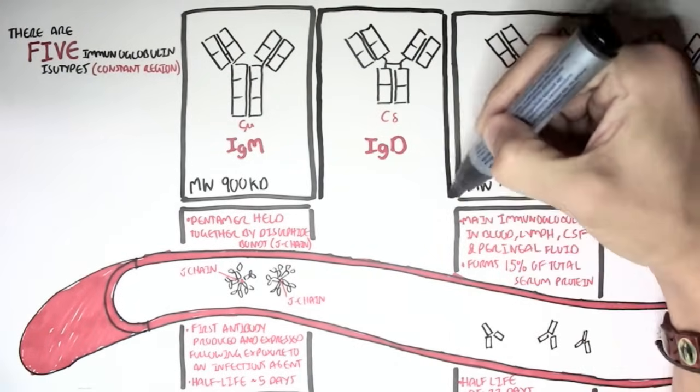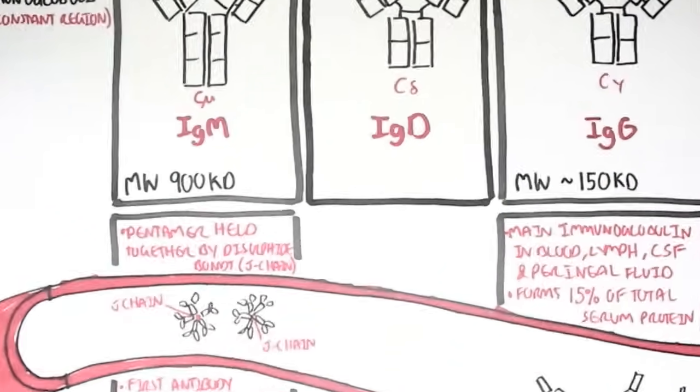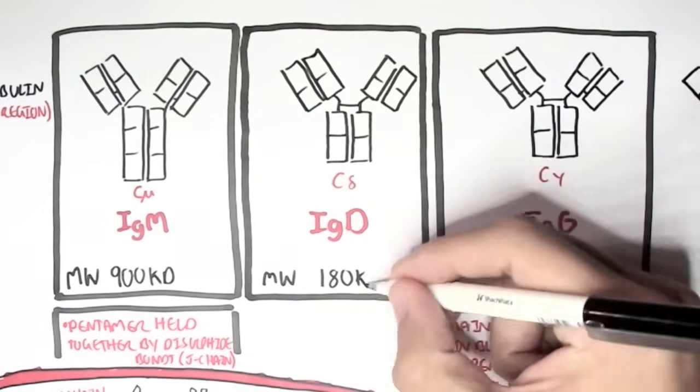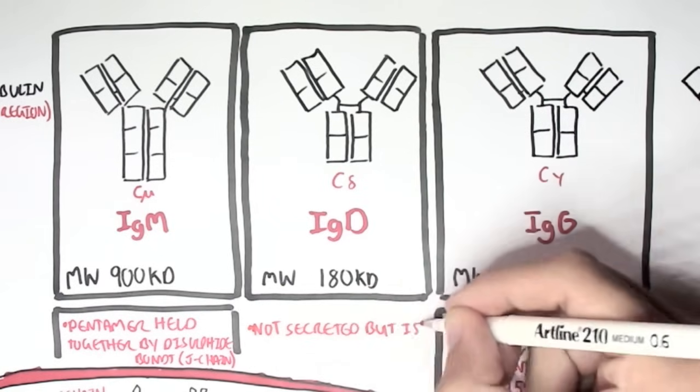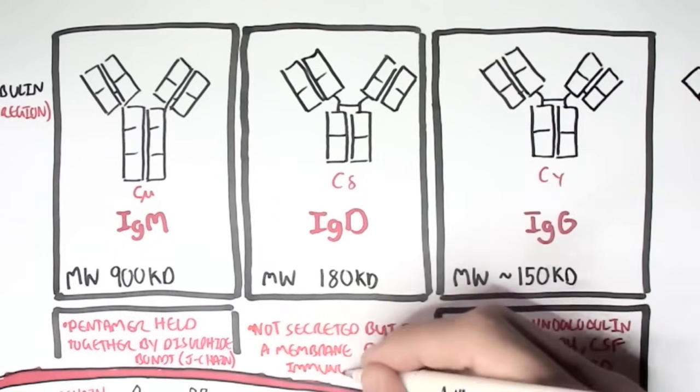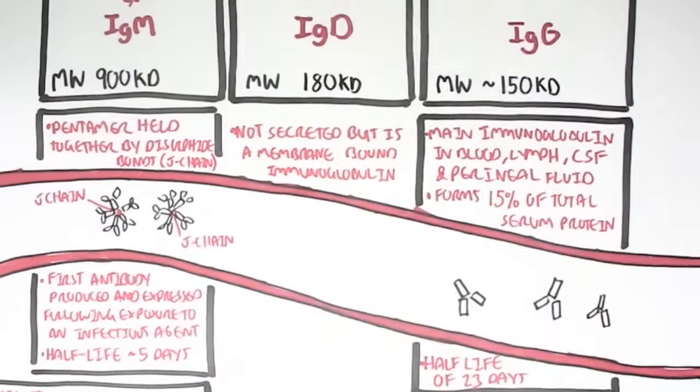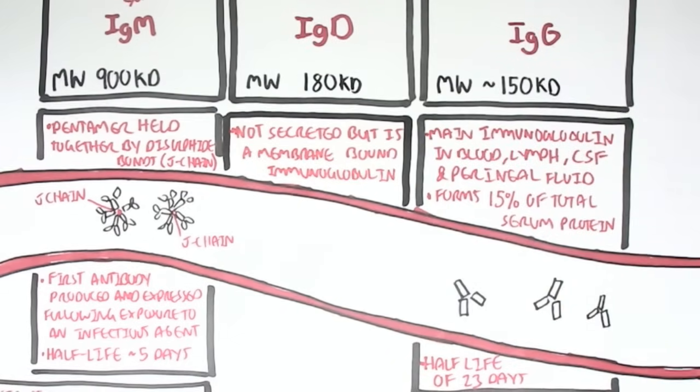Now, let's look at IgD. IgD has a molecular weight of 180. It is not a secreted immunoglobulin, but it is a membrane-bound immunoglobulin. So for example,